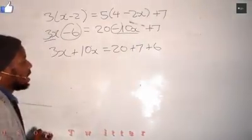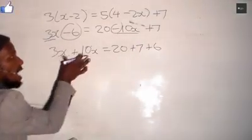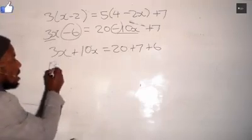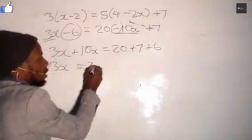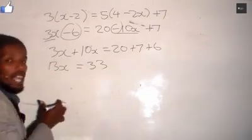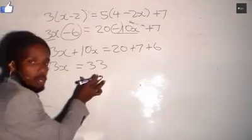It becomes a positive 6 right there. Now on this side we have 3x plus 10x, which becomes 13x equals 20 plus 7 plus 6. That is 33. So now we have 13x equals 33.